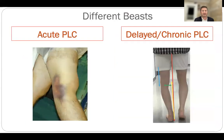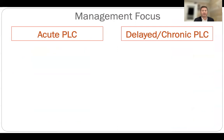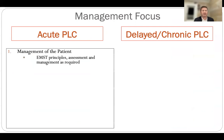I'm going to divide up management of the posterolateral corner into the acute and the delayed or chronic cases, because they are very different and require different points of focus in terms of their appropriate management. In the acute injury they tend to be high-energy injuries, often associated with multi-ligament injuries of the knee.